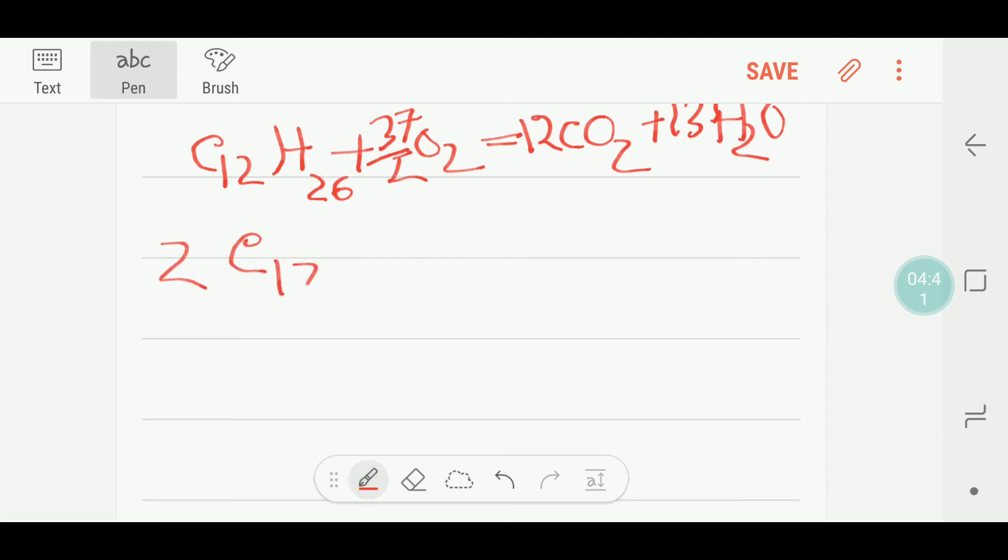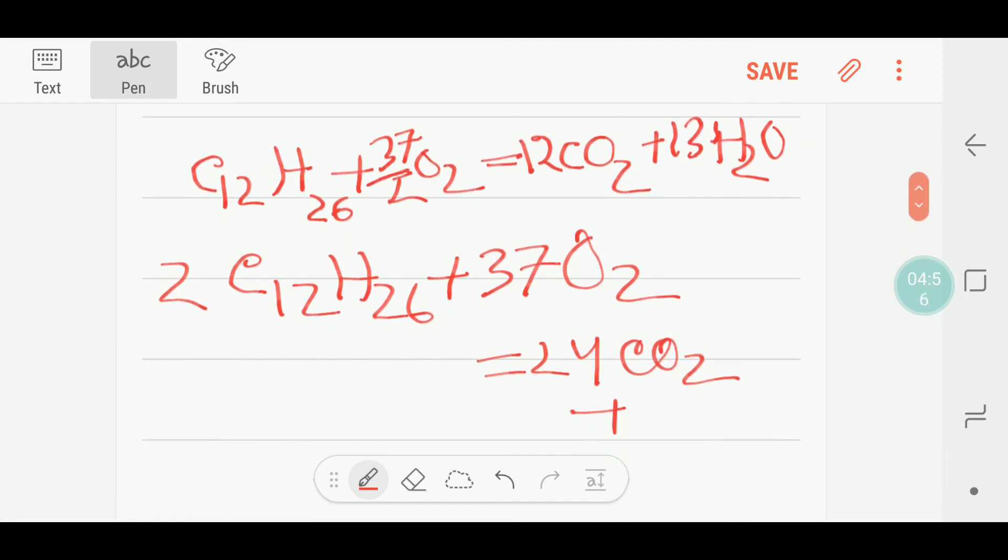If we multiply here by 2, 37 divided by 2 times 2, we are getting 24 carbon dioxide plus 13 times 2, that is 26 water. So this is the balanced reaction.